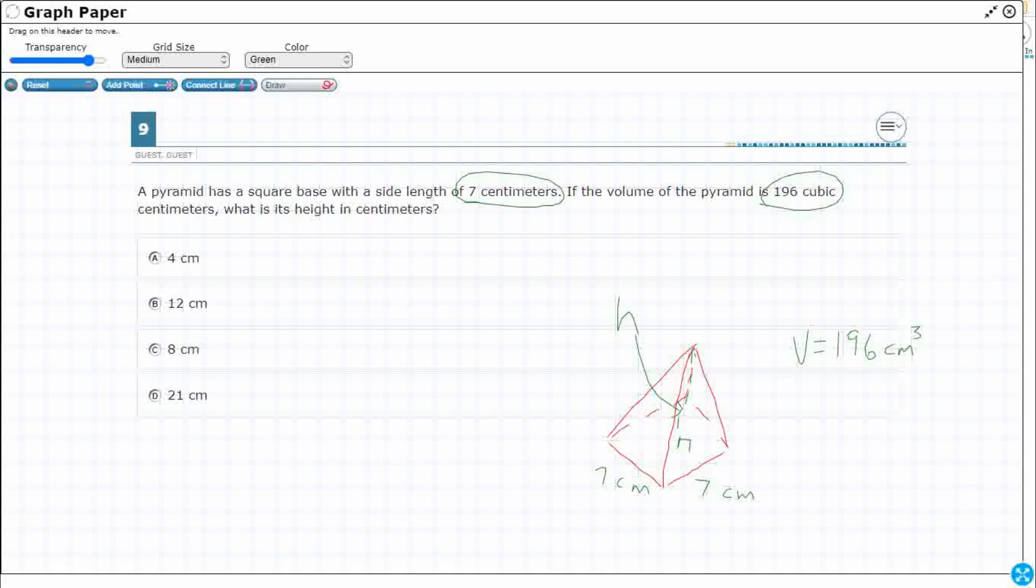So that's all we're looking for. So what do we know about volume? Remember, we said volume equals 196, right? We also know that volume equals, let's make that cubed here, volume equals that one-third base times height.